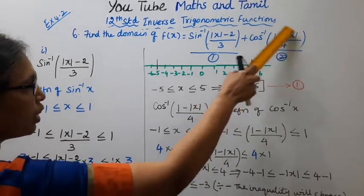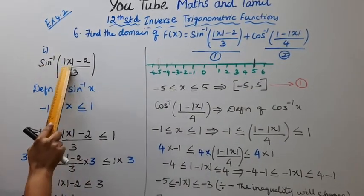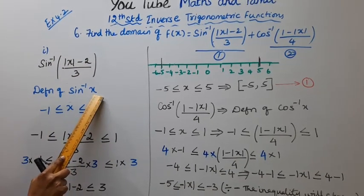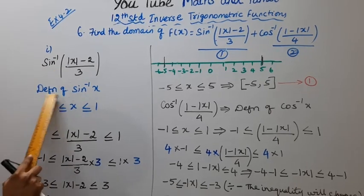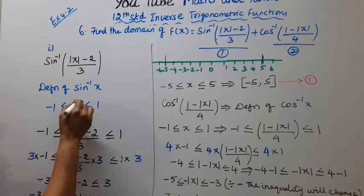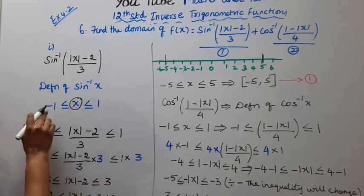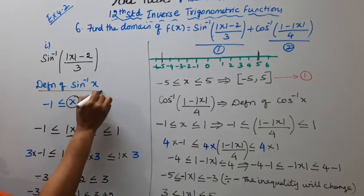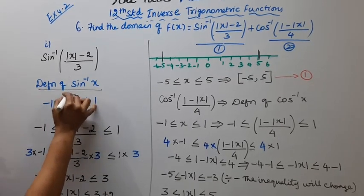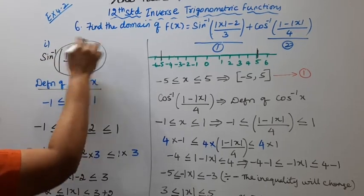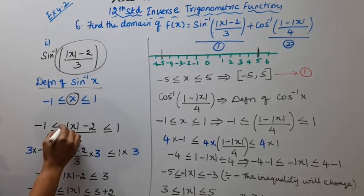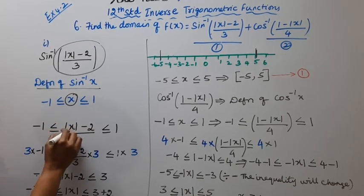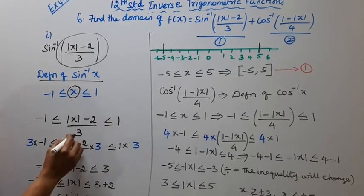Now, for part 1, sin inverse of mod x minus 2 by 3. Using the definition of sin inverse of x: x lies between minus 1 and 1, that is, minus 1 less than or equal to x less than or equal to 1. So for sin inverse of mod x minus 2 by 3, we apply: minus 1 less than or equal to mod x minus 2 by 3 less than or equal to 1.